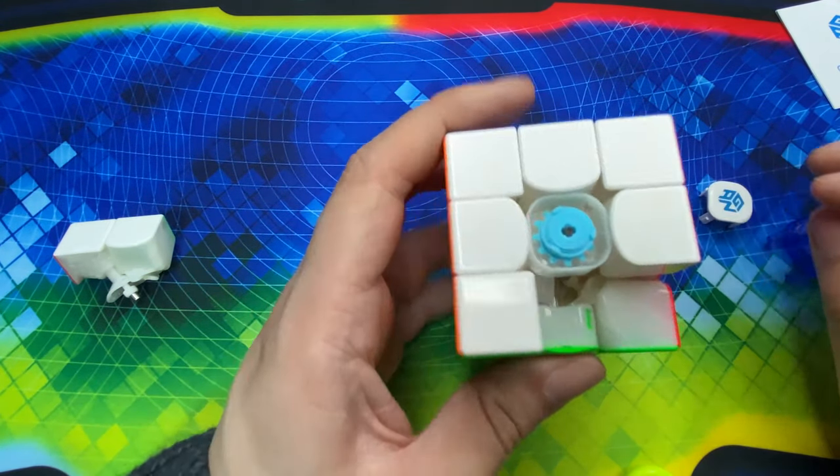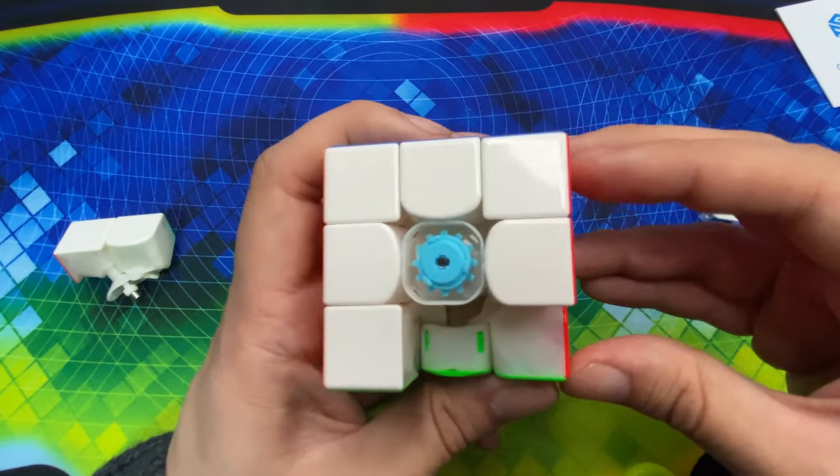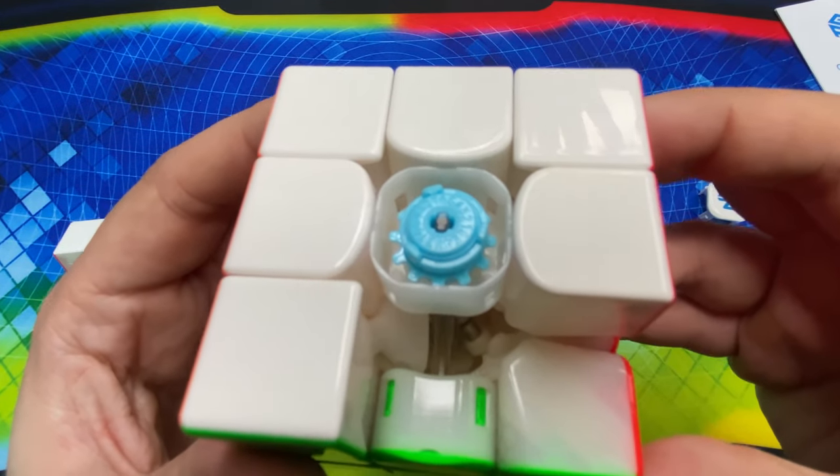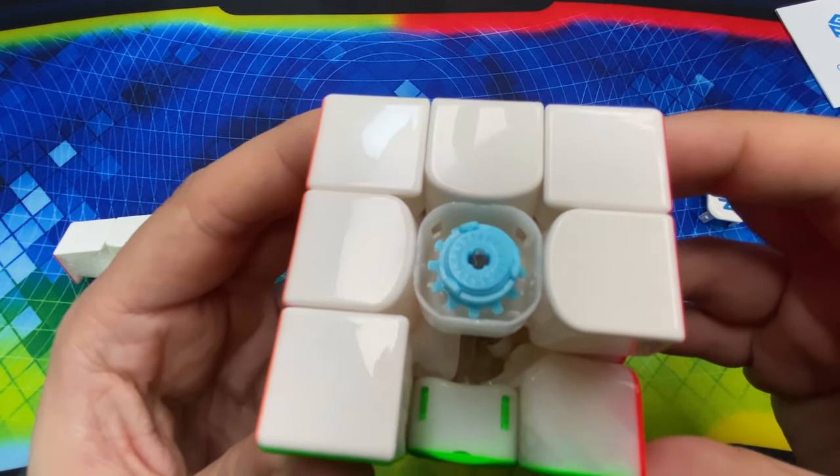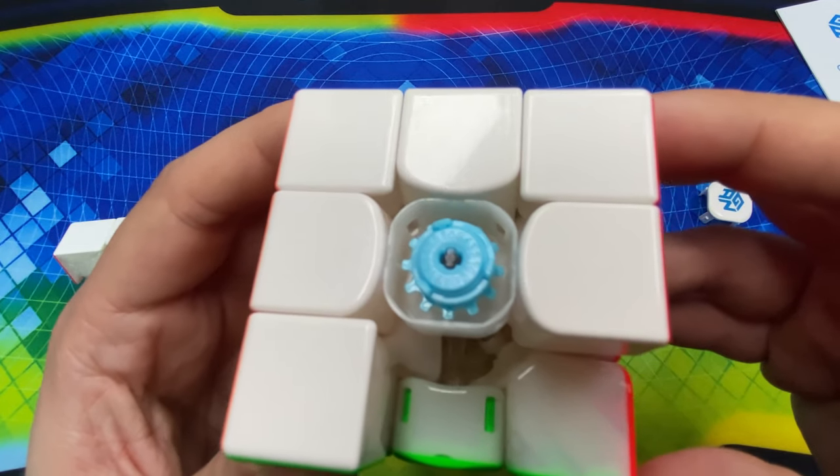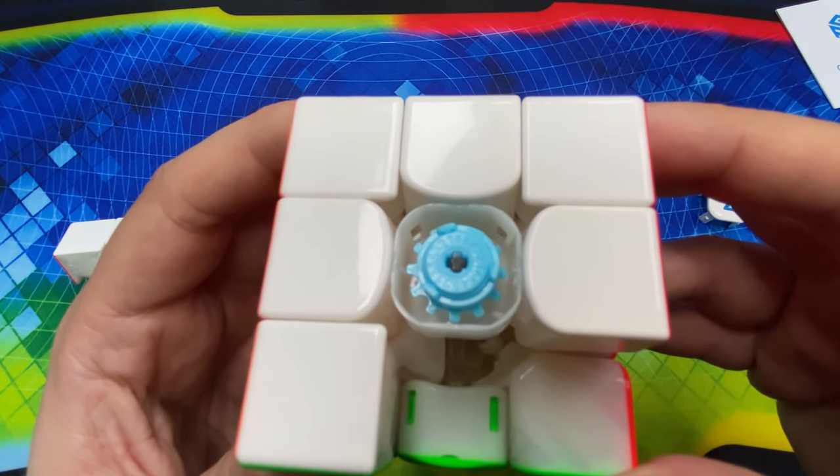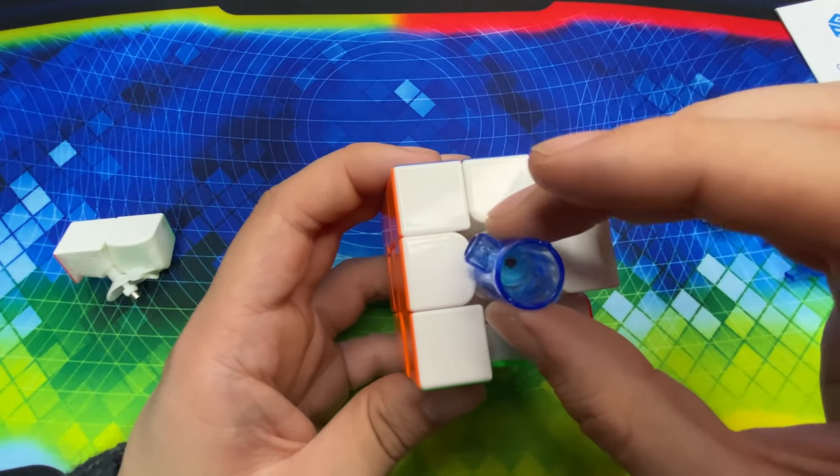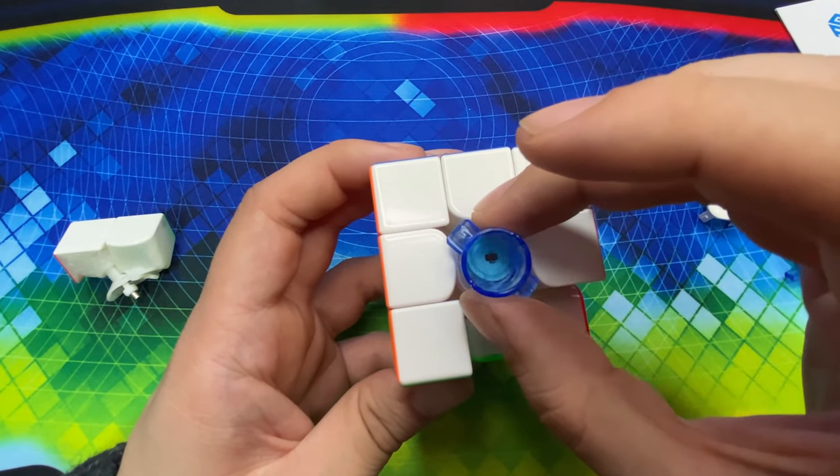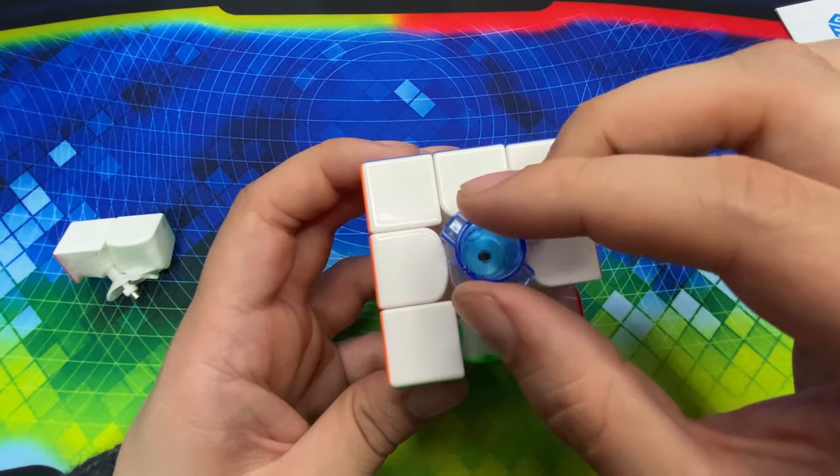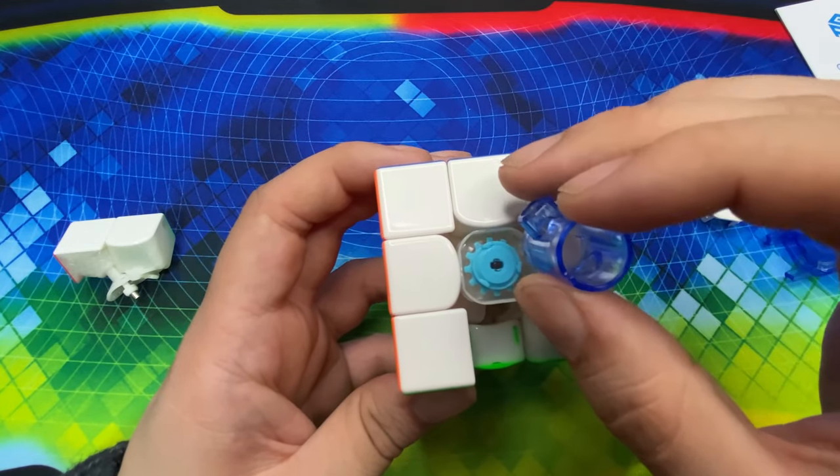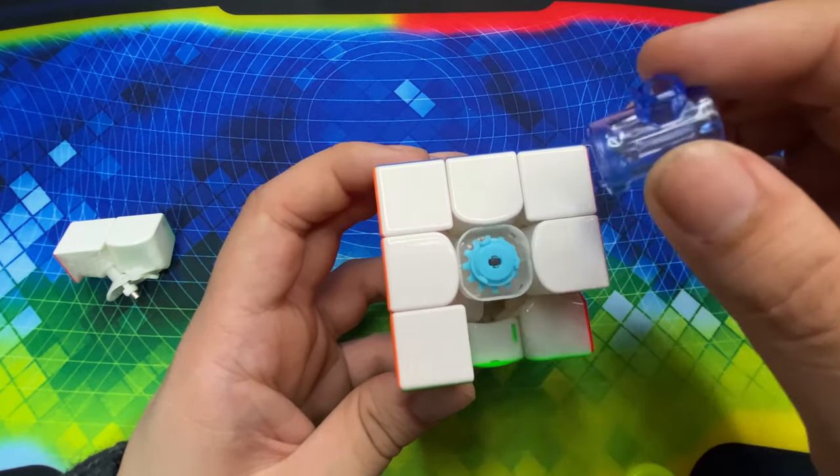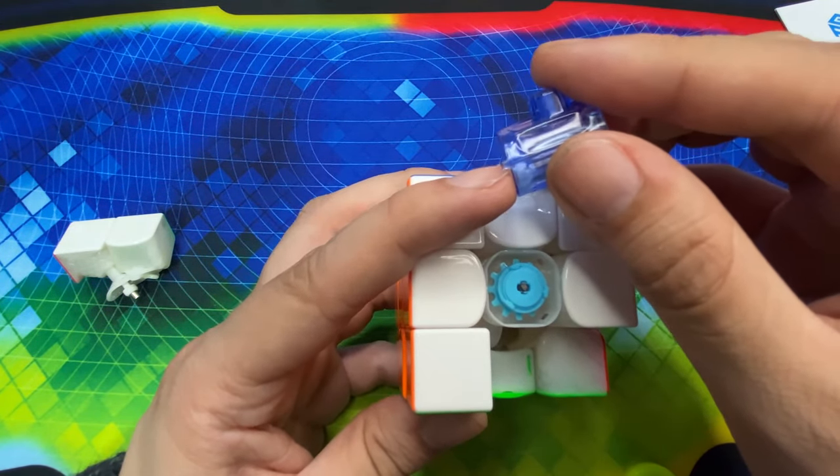Y acá podemos ver el nuevo sistema de ajustes dual de GAN. Ahí está chicos pueden ver los numeritos sin embargo este diría que si es un cambio estético porque por lo que veo tiene exactamente la misma funcionalidad. Entonces ya saben si quieren ajustar su cubo para la parte superior utilicen la parte superior del hidrante y para la parte inferior estas salientes que tiene el borde.